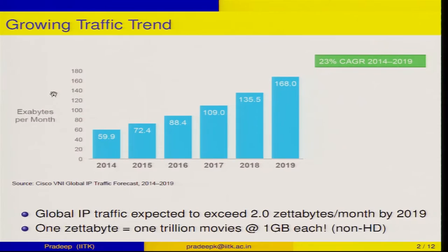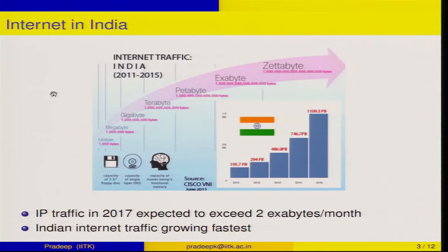Just to put the number 2 zettabytes per month in context: 1 zettabyte allows you to store 1 trillion — that is 1000 billion — movies, each if you assume they are digitized at 1 gigabyte, meaning each movie occupies 1 GB, so you can store 1 trillion movies in non-HD format. Of course, this 1 trillion can come down a bit depending on whether each movie would be more than 1 GB, but this is roughly the ballpark number.